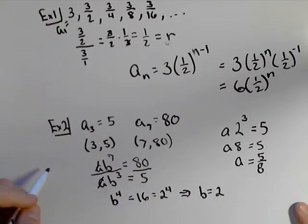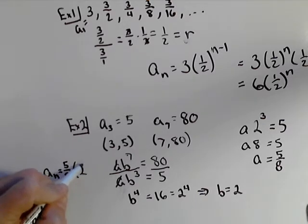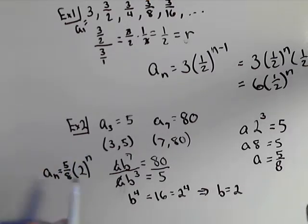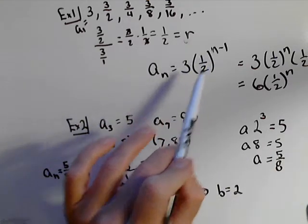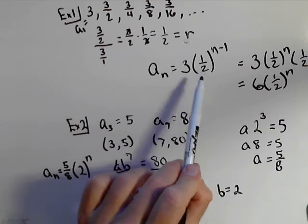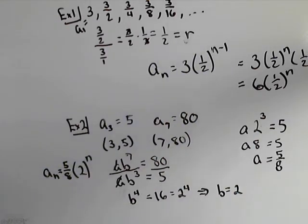So our general term in this case is going to be a sub n equals five eighths times two to the n. Now we didn't use an n minus one here because of the way we solved it. When you'll use the n minus one is when what you know is the common ratio and the first term, that's a very slick, easy way to put together the formula.